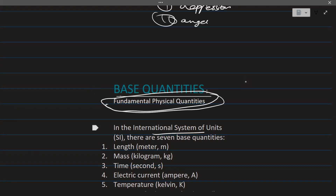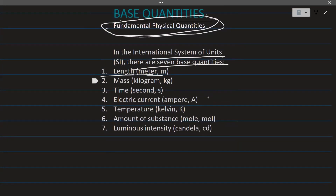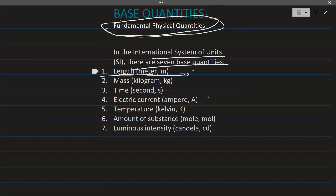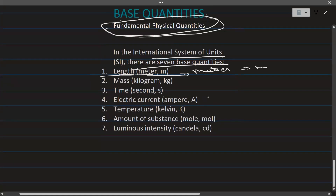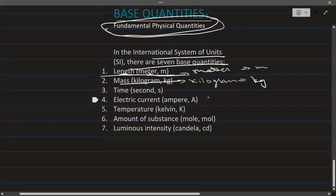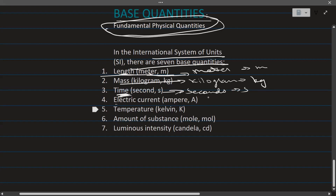In the international system of units there are seven base quantities. The first is length — its base unit is the meter and its symbol is m. The second is mass — its base unit is the kilogram and its symbol is kg. The third is time — its base unit is seconds and its symbol is s.